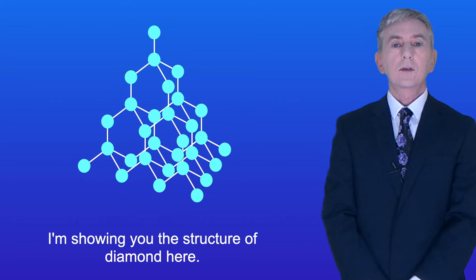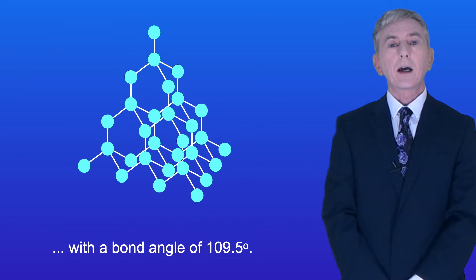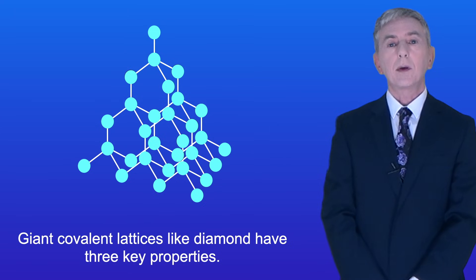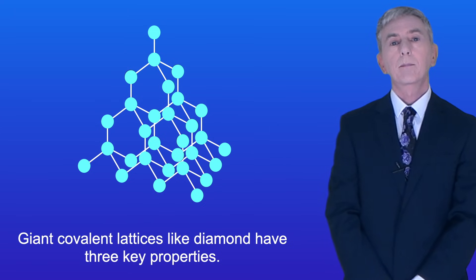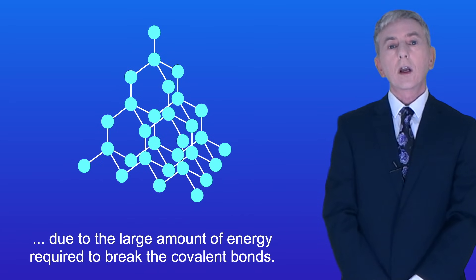I'm showing you the structure of diamond here. In diamond, the atoms are arranged in a tetrahedral structure with a bond angle of 109.5 degrees. Now giant covalent lattices like diamond have three key properties. As we've seen, they have a high melting and boiling point due to the large amount of energy required to break the covalent bonds.